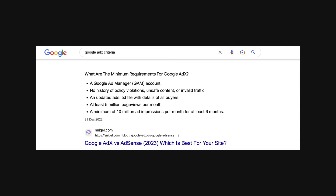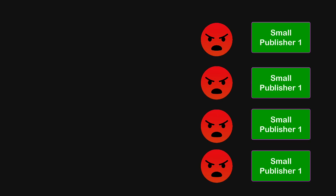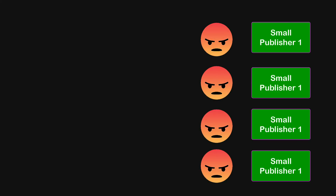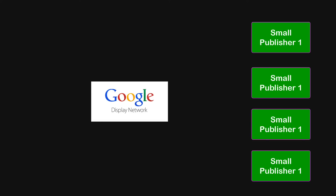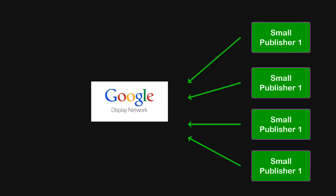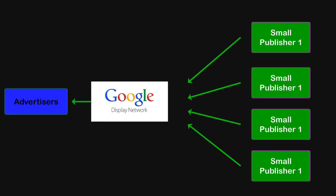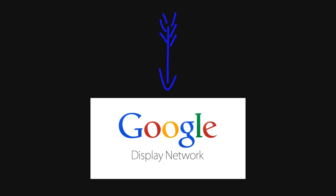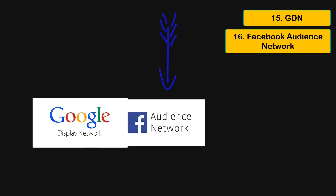For example, a DSP might say that if you are a publisher with at least 10,000 visitors or traffic every day, only then can you connect your website to the ad exchange and sell your inventory. Anyone with less traffic will not be able to do so. The smaller publishers who don't meet this traffic criteria partner with bigger companies called ad networks, who represent the inventory of all these small publishers together and sell the ad slots through ad exchanges for a commission.